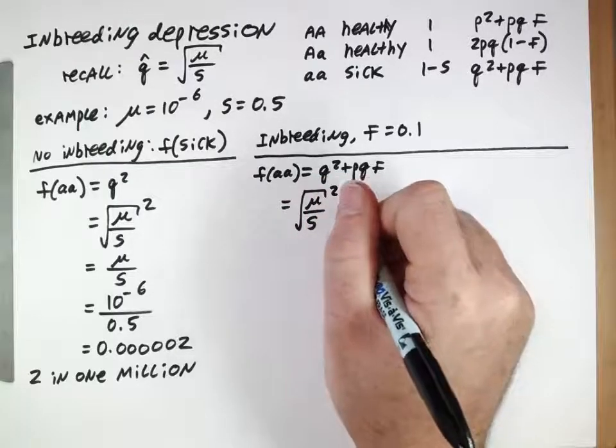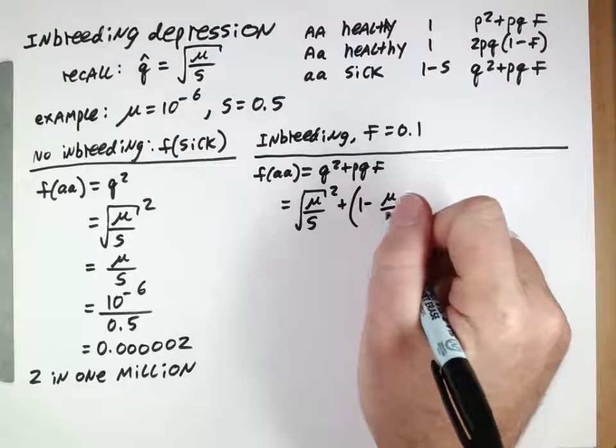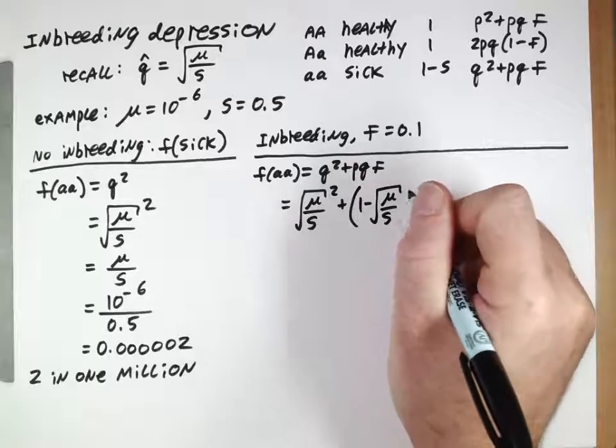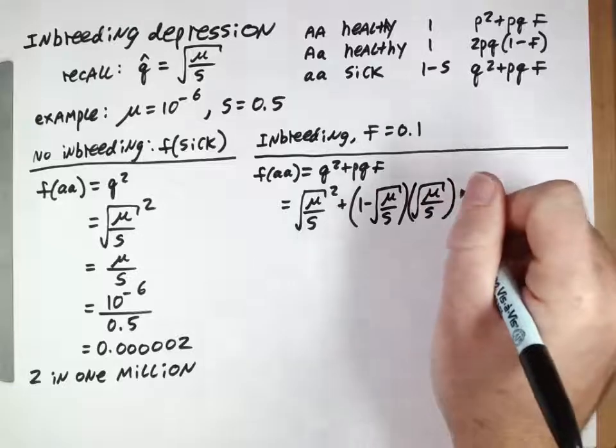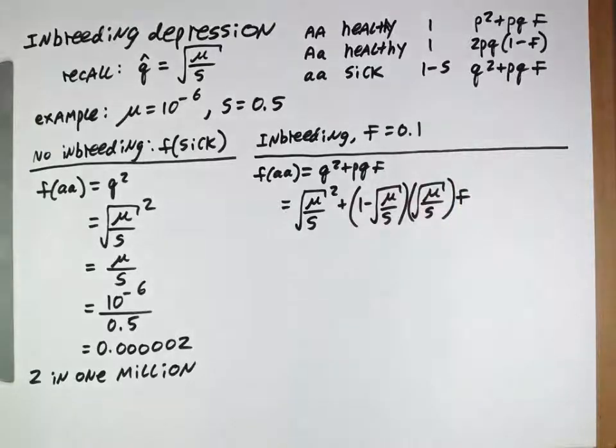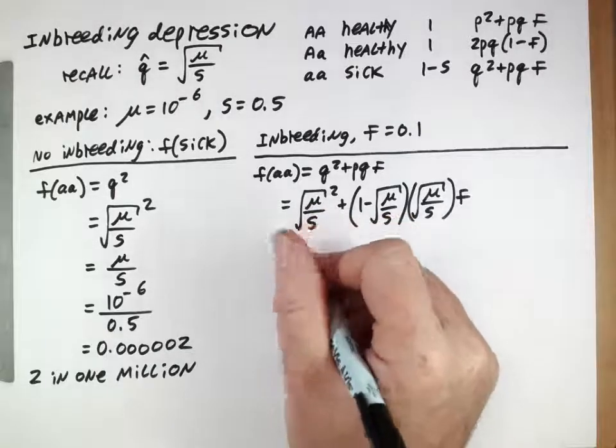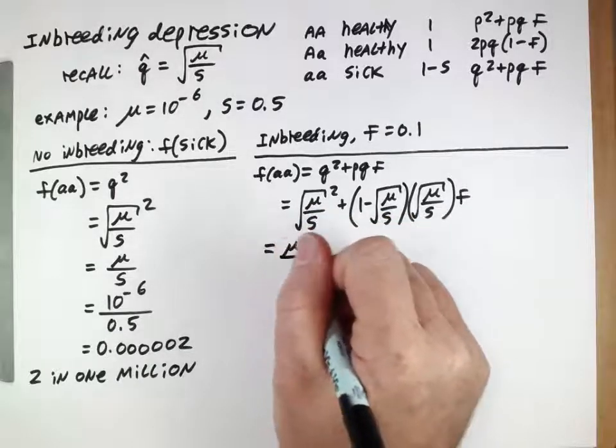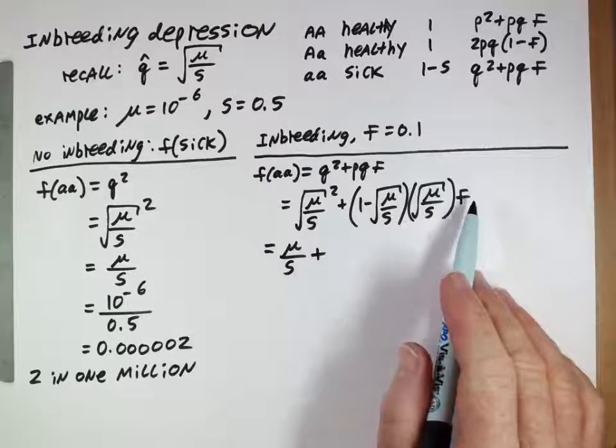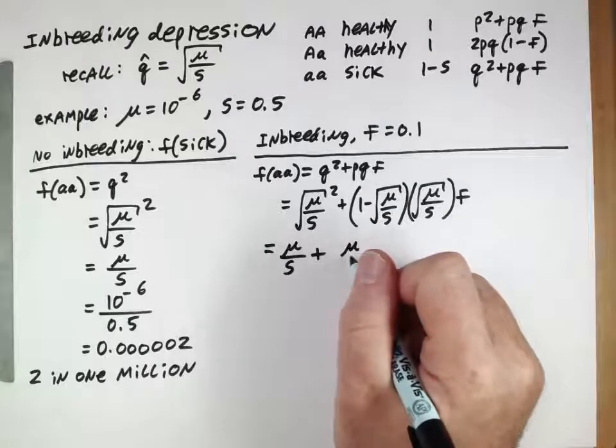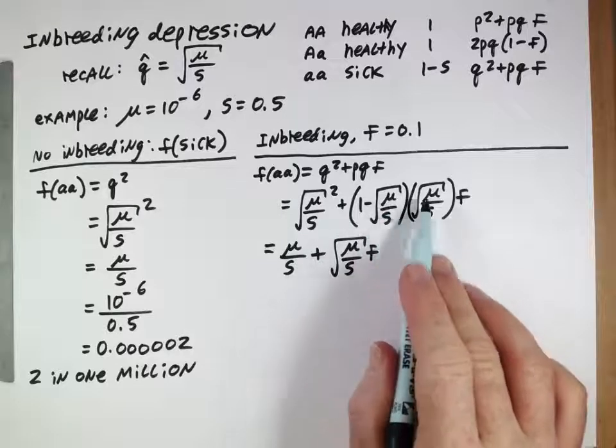q squared, mu over s, is q squared plus p. p is 1 minus q times q times F. We can multiply those last terms out, so this simplifies to mu over s. We have one times this times this, so that's just square root of mu times s times F, and then a negative in this root times this root.